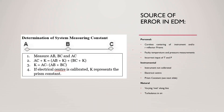Sources of error in EDM include personal error — that is, careless centering of the instrument — as well as temperature and pressure measurement errors, and incorrect input. You need to be able to identify the instrument, set the electrical center, and set the prisms correctly.